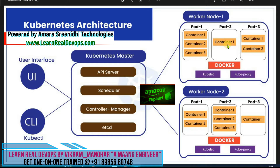But where exactly is the container running? The container is running inside a pod. Where is the pod located? The pod is located inside the Kubernetes cluster, on a worker node. A worker node can be understood as your host machine which has the actual resources like RAM and CPU.